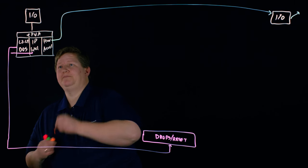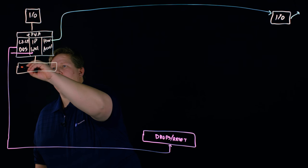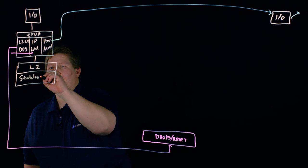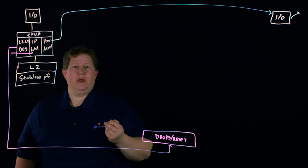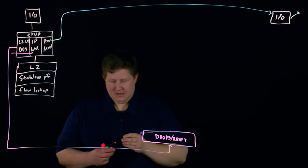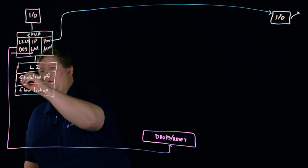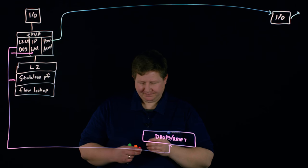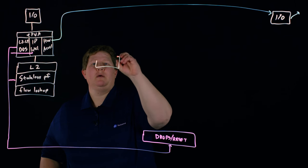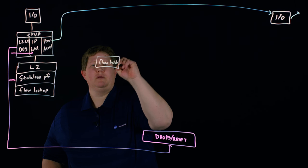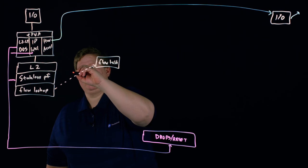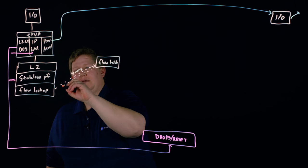If there isn't anything the ASIC can handle, the packet drops down to Layer 2. In Layer 2 we have the stateless packet filters and then we also have our flow lookups. If the stateless packet filters catch anything, we drop down to a drop and reset. At the flow lookup point, we take a look at the flow table — this is a control plane query that responds yay or nay on an existing flow.